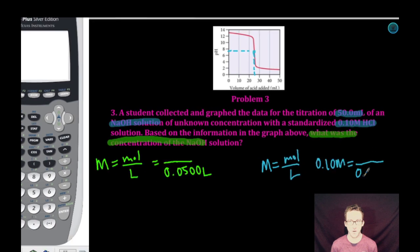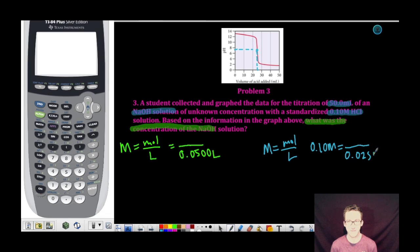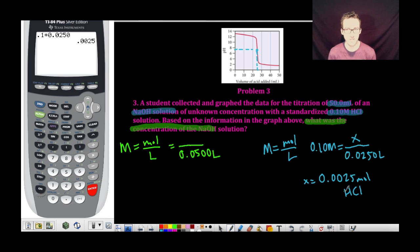A quick trip to my calculator, 0.10 times 0.0250 liters, indicates that I have 0.0025 moles of HCl. That is how many moles of HCl were in the 25 milliliters of 0.1 molar HCl that I used.